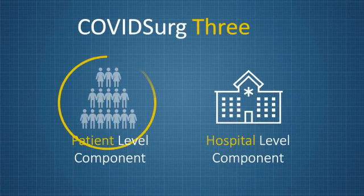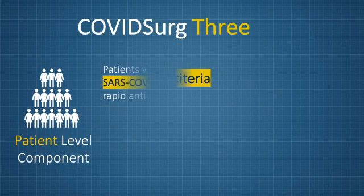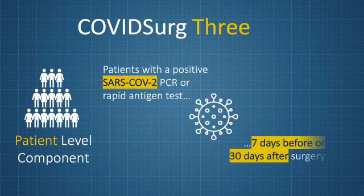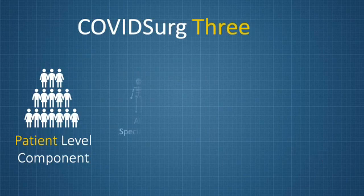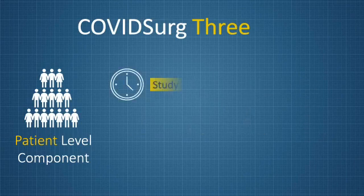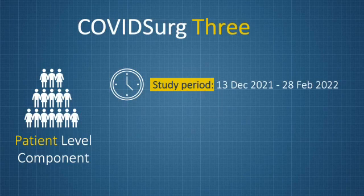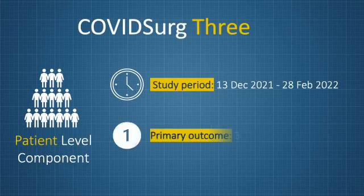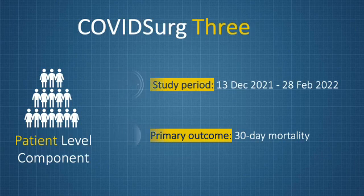First, let's look at the patient level component. All patients with confirmed SARS-CoV-2 within the perioperative period will be included across all specialties, ages, indications and modes of anaesthesia. The patient inclusion window is from 13 December 2021 to 28 February 2022. All eligible patients within this December to February period should be included. The primary outcome measure will be the 30-day mortality.